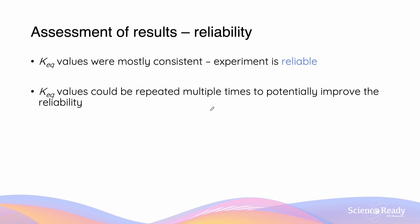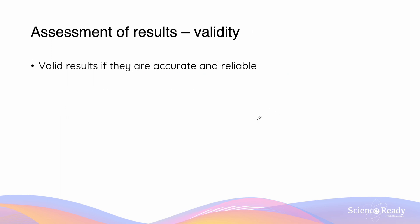Regarding reliability, it is dependent on the consistency of our experiment. Since the standard deviation of the four Keq values is quite low, we can say that the experiment is reliable. The Keq values could have been repeated multiple times, which could potentially improve reliability. It's important to know that repetition can only potentially improve reliability — we do not know if those results will be more consistent. Results are valid if they are both accurate and reliable, and can vary from experiment to experiment depending on whether the correct method and materials were used.